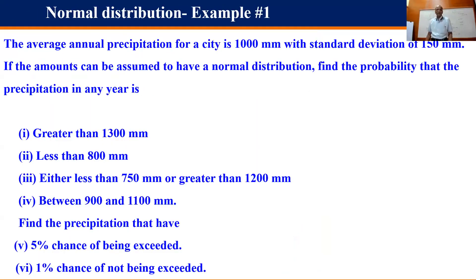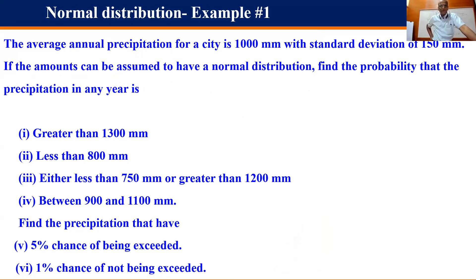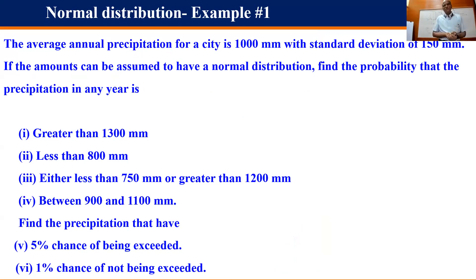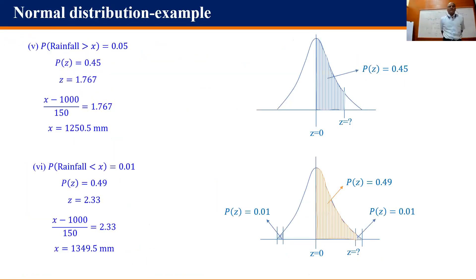The last tricky part: find the rainfall that has a 5% chance of being exceeded. So P(rainfall > x) = 0.05, meaning P(Z) = 0.45. We are now doing inverse Gaussian — given a probability, find the value. This is training in Gaussian distribution. Note: if you use a dataset, it is statistics; working with probability functions directly is probability.